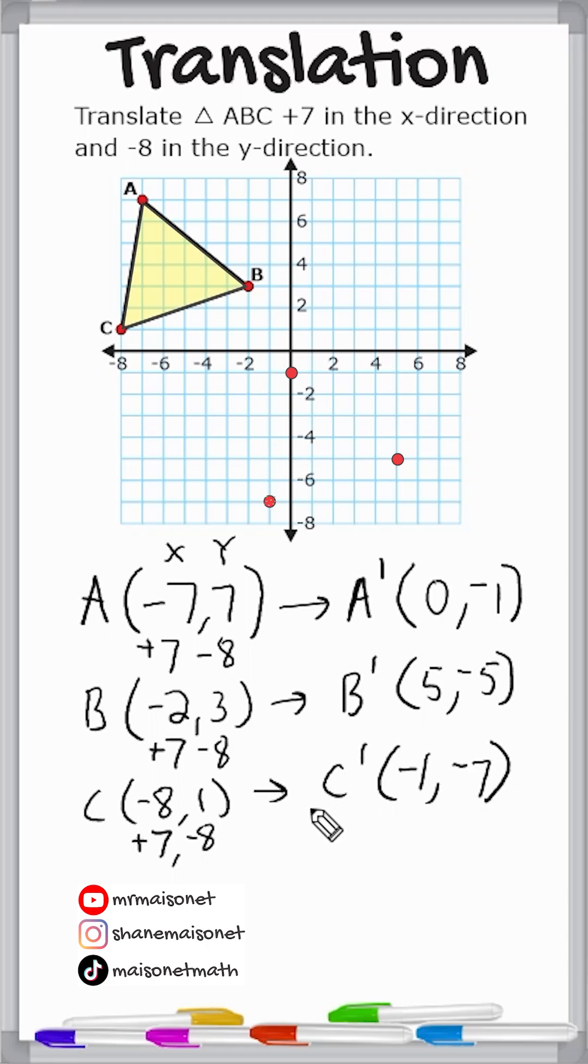So all you really have to do with a translation is just take the change in the x-direction and apply that change to all of the x-values, and take the change in the y-direction and apply that number to all of the y-values.